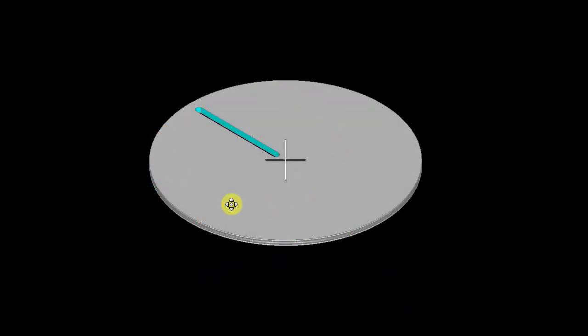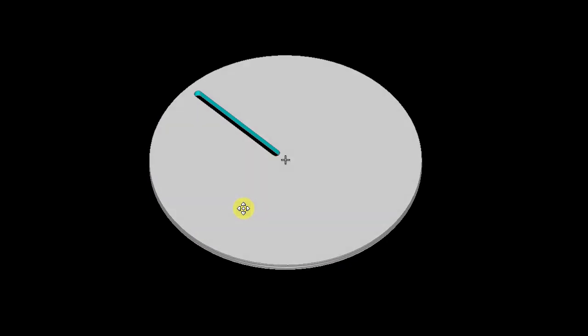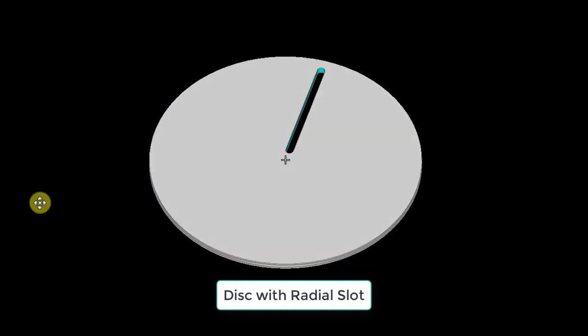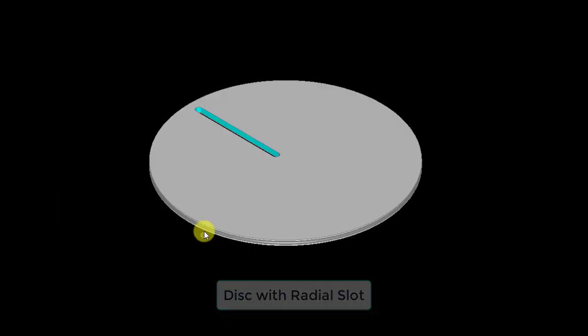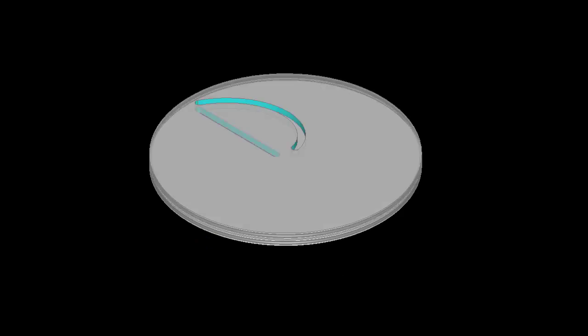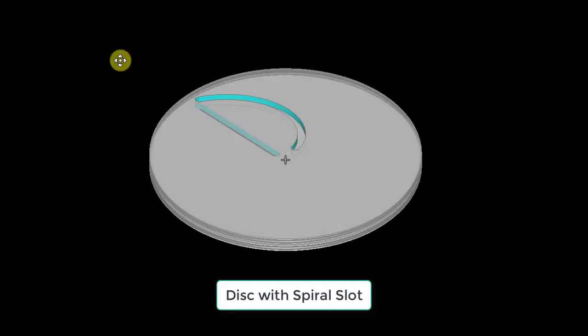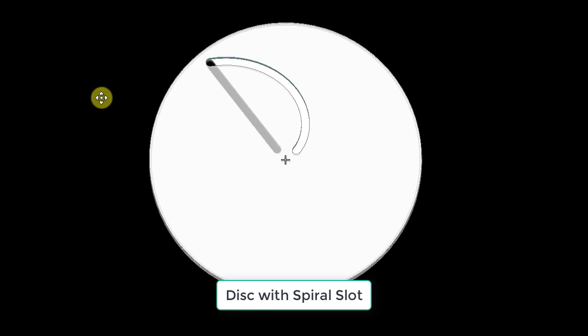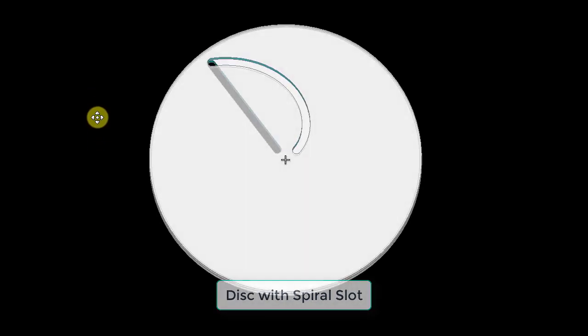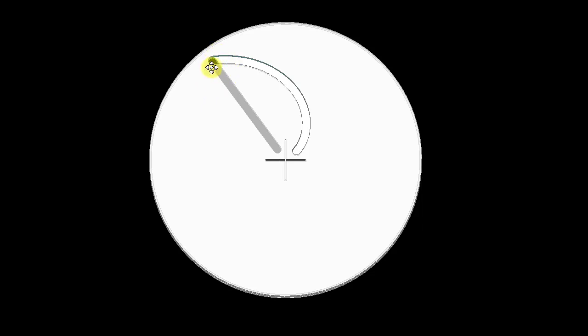We are going to start with a disc like this which has got a radial slot, a straight radial slot like this and on top of that we place another disc with a curve slot. Now, this curve we have chosen to be a spiral, a mathematically correct spiral and you can see these two slots intersect over here creating an opening.